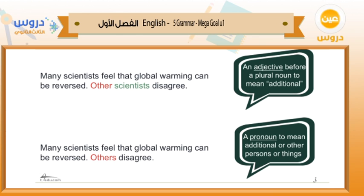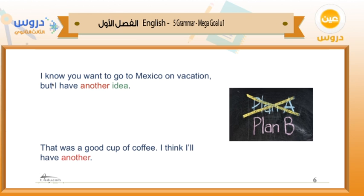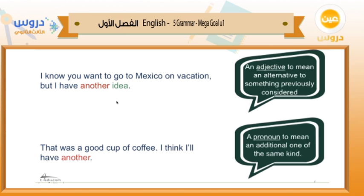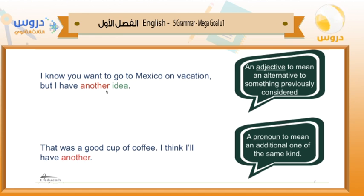Now let's move to 'another.' Number one: 'I know you want to go to Mexico on vacation, but I have another idea.' Number two: 'That was a good cup of coffee — I think I'll have another.' In the first sentence, 'another' is an adjective that comes before a noun to describe it — 'another idea' — giving the meaning of an alternative. You have an idea but I have another one. So it's an adjective meaning an alternative to something previously considered.